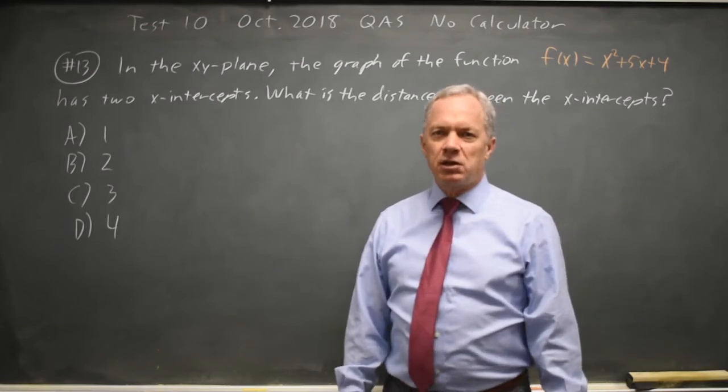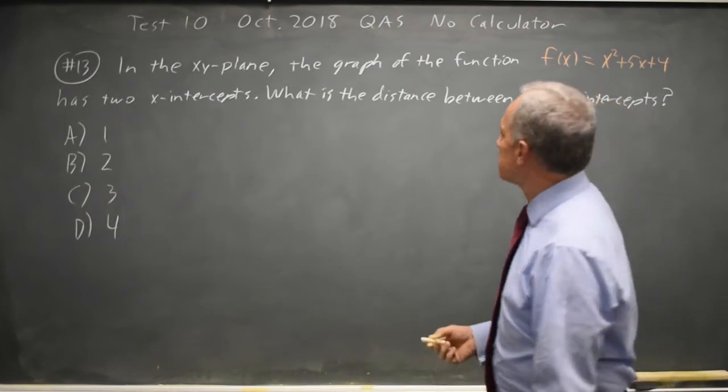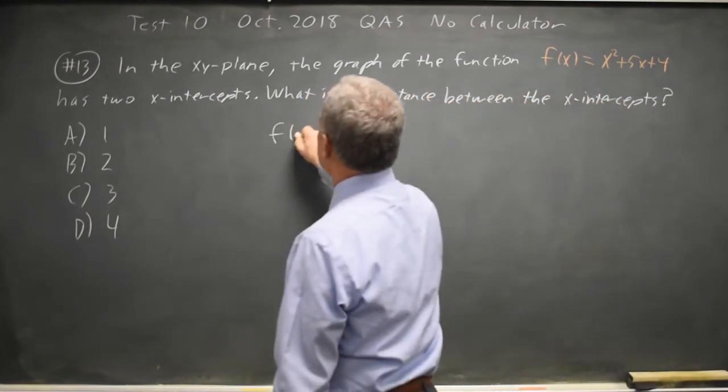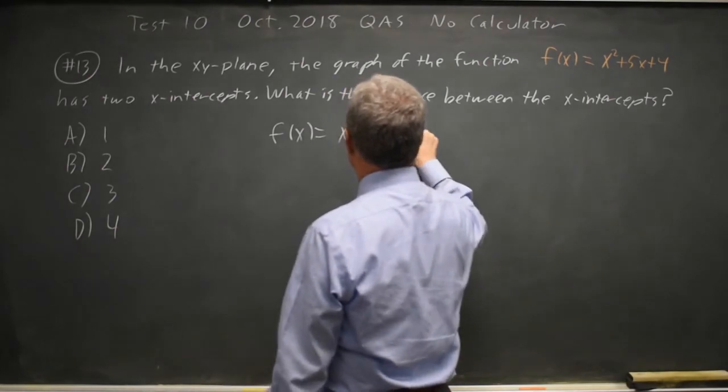This is question 13. College Board gives us a quadratic equation and asks for the distance between the x-intercepts. So I have f of x equals x squared plus 5x plus 4.